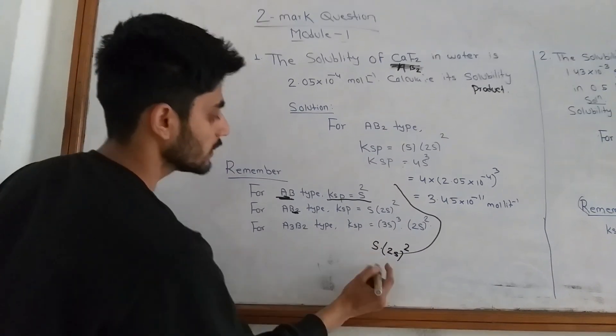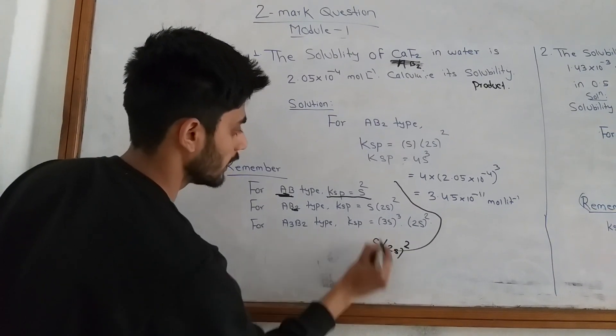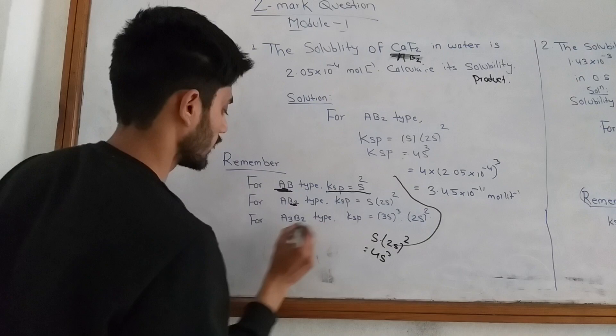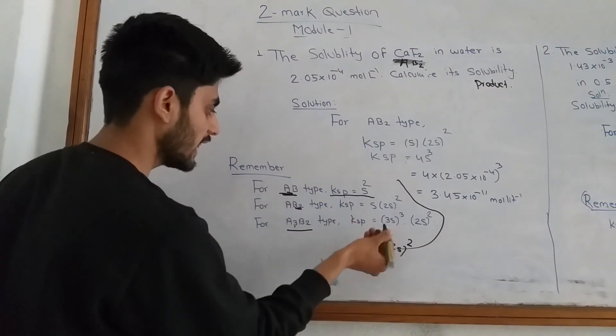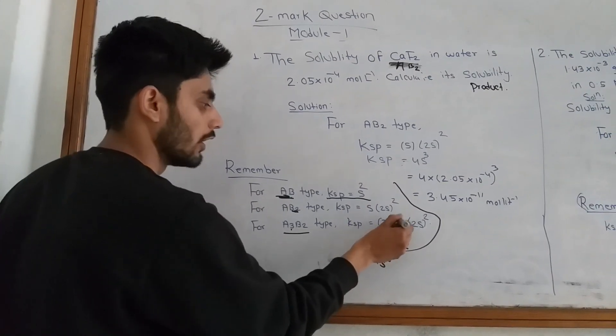For AB2 type, KSP is equal to 4S cubed. This is the coefficient, this is the power of S. Remember this number.